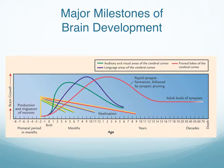The frontal lobes undergo a more extended period of synaptic growth — this process takes longer. Housed in the frontal lobes is all of our higher thinking and higher cognitive processes, like problem solving, planning, and decision making. In each area there's an overproduction of synapses followed by synaptic pruning. The straight lines depict myelination, which occurs at a rapid pace during the first two years and then at a slower pace during childhood and adolescence, continuing for a longer period in the frontal lobes.